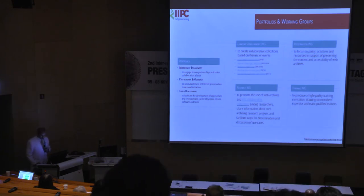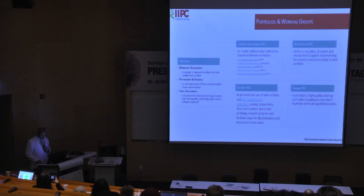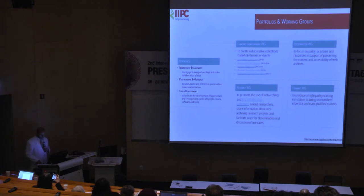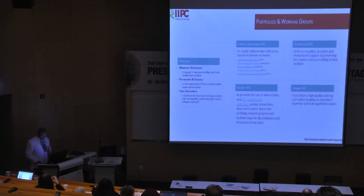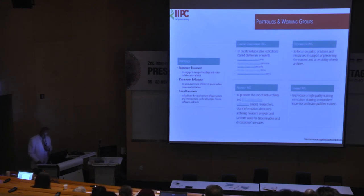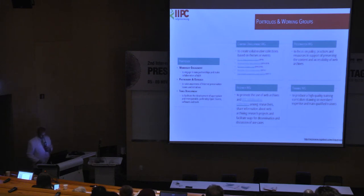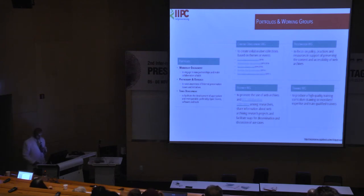The IIPC is a consortium with a steering committee — the Library of Alexandria is currently serving as a steering committee member. The IIPC has three portfolios: membership engagement, partnerships and outreach, and tools development. Currently we have four working groups: preservation, content development, training, and research. The training working group is developing curricula and online documentation to get institutions started with web archiving. The research working group is trying to promote web archives as a dataset for research.